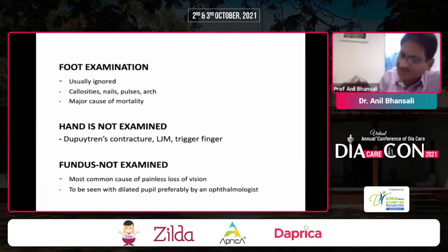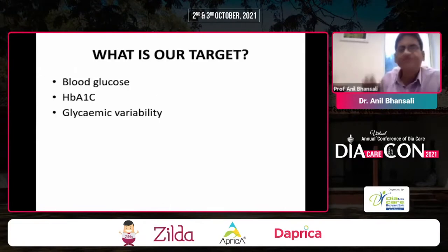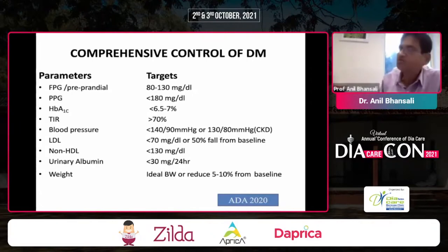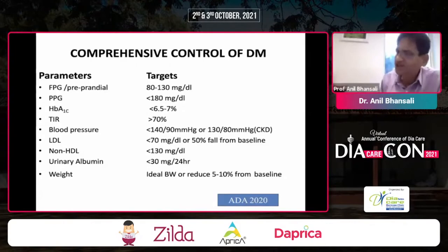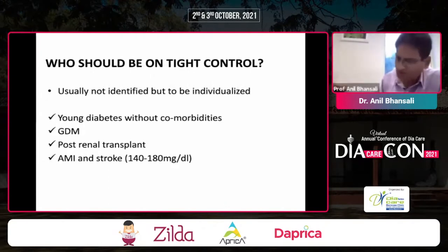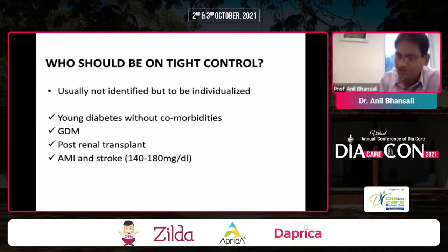Fundus examination is essential as it is a mirror of diabetic complications; diabetic retinopathy is the most consistent microvascular complication. Our target should not be only glucocentric — blood glucose and HbA1c — but should also include glycemic variability. The comprehensive targets include fasting, postprandial, HbA1c, time in range, blood pressure, LDL, non-HDL, microalbuminuria, and weight. SMBG can substitute CGM for time-in-range assessment. For tight control: young diabetics without comorbidities, GDM, post-transplant, acute MI, and stroke patients should target 140 to 180 as shown by the NICE-SUGAR study.